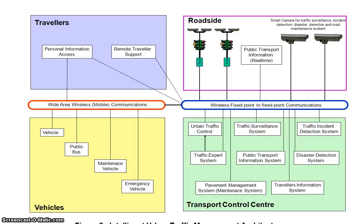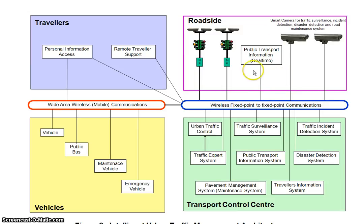The physical architecture of the system works like this: we have a fixed-point to fixed-point wireless communication system and also a wireless mobile communication system. This covers the traffic light and public transport information system.